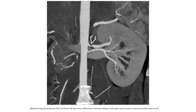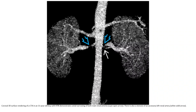Maximum intensity projection CTA in an 8-year-old with severe hypertension shows a focal narrowing of a left polar accessory renal artery. Coronal CTA surface rendering of a CTA in an 11-year-old boy with hypertension demonstrates posterior narrowing of both main renal arteries. There is also a stenosis of an accessory left renal artery.